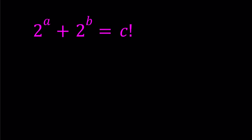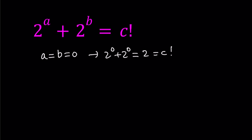First of all, let's observe that we can find some particular solutions. For example, if a and b are both equal to 0, then we get 2 to the power of 0 plus 2 to the power of 0, which equals 1 plus 1 equals 2. And 2 equals 2 factorial, so we get the solution a=0, b=0, c=2. So (0, 0, 2) is a solution.